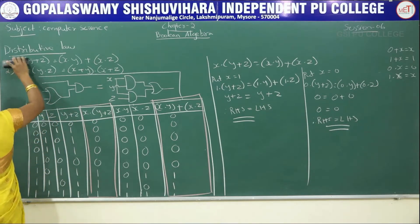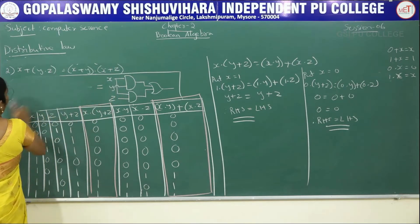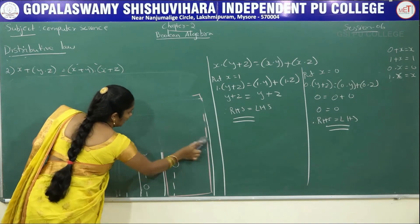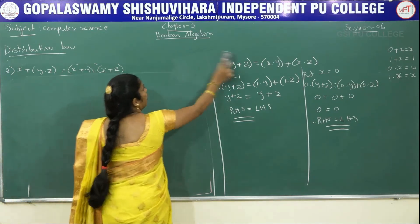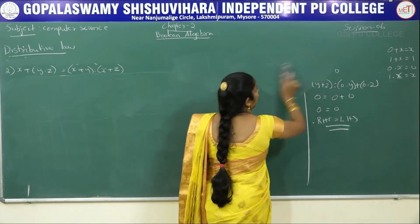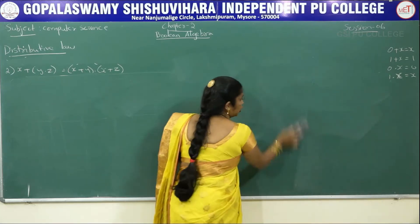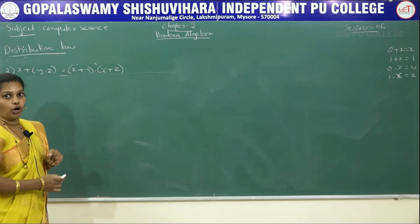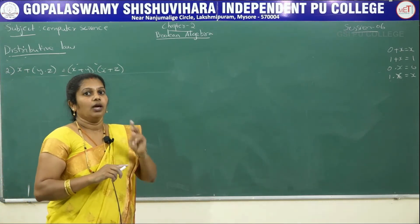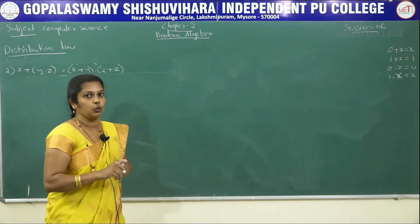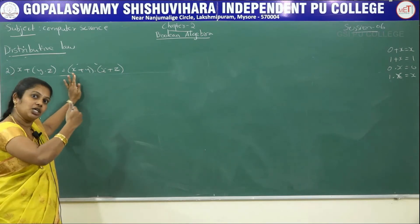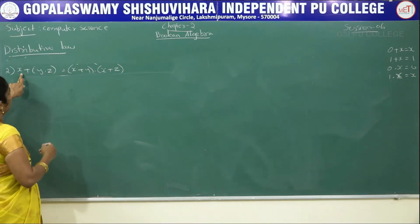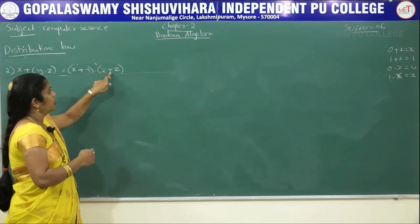Next we explain the second distributive law: x + (y·z) = (x+y)·(x+z). While explaining, we must write the symbol, truth table, and solve by perfect induction method to get full 5 marks in the annual exam. The total weightage of this chapter is 9 marks, and they may ask you to prove the distributive law for 5 marks.